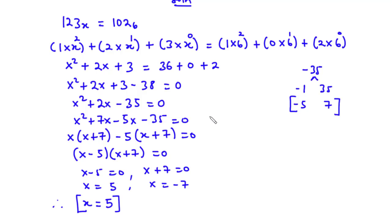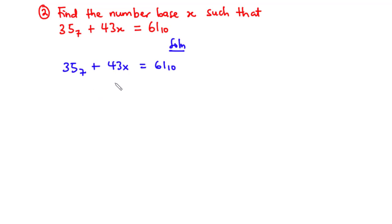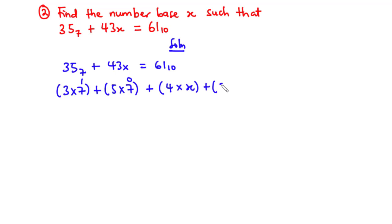Now let's solve example 2. We need to find the number base x such that 35 base 7 plus 43 base x equals 61 base 10. Converting to base 10, we have 3 times 7 to the power 1 plus 5 times 7 to the power 0, plus 4 times x to the power 1 plus 3 times x to the power 0. Since 61 is already in base 10, we leave it as such.